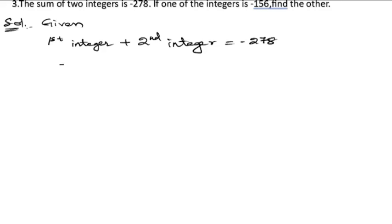The first integer we know is minus 156, plus the second integer we don't know, equals minus 278. Now we can send this minus 156 to that side.